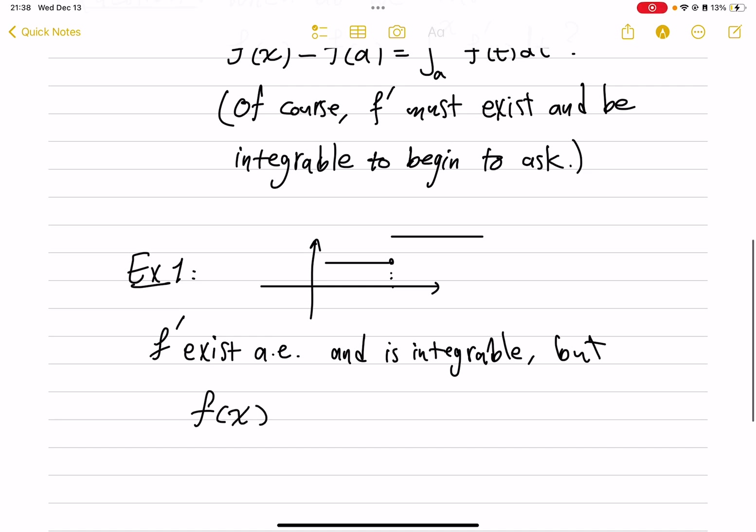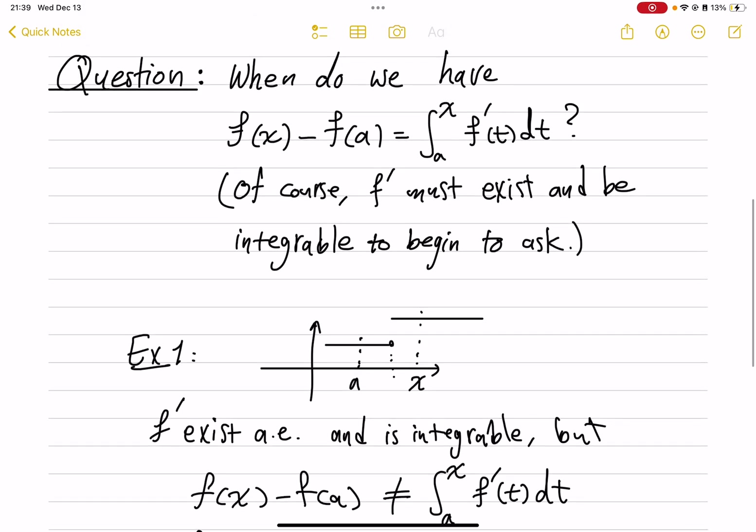But f(x) minus f(a) is not equal to the integral from a to x of f'(t) dt for many a less than x. In particular, if x is here and a is here, this fails. So even though we can make sense of the integral, the equality does not hold.